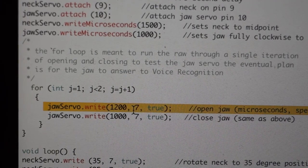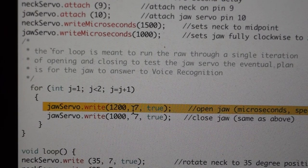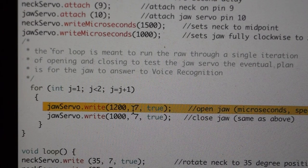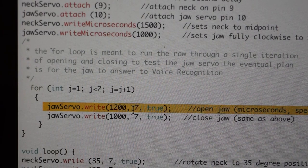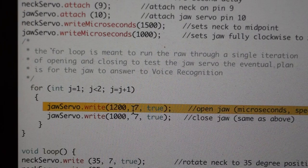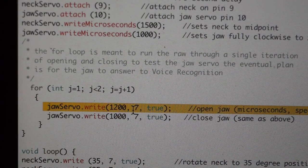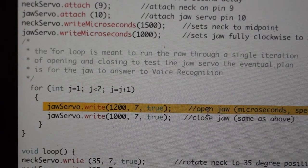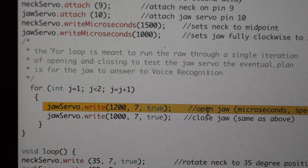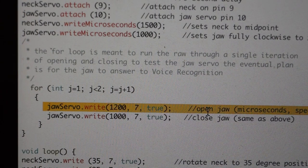Because we're using the variable speed servo library, I can designate the speed that I want this to be. So the jaw is going to open to the position of 1200 microseconds at a speed of 7. This is between 1 and 255. However, a lot of documentation will show you that you really don't, you can't visually see a difference in servo speed beyond about 127.